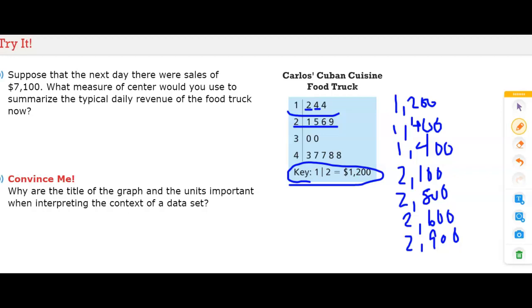So, now we can go back to answering the question. It says, what measure of center would you use to summarize the typical daily revenue of the food truck now? That means they've added this 7,100. That means if I were to add to my data here, now I have a 7 in my stem and leaf plot and a 1. That means 7,100.